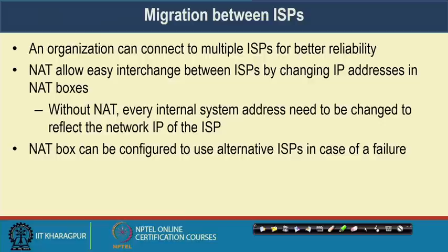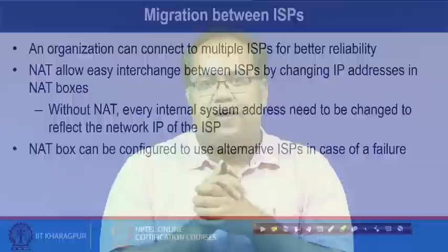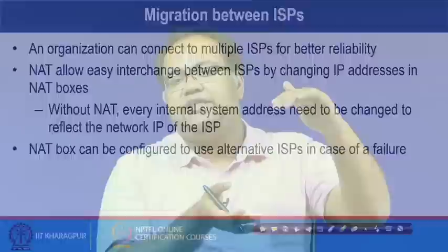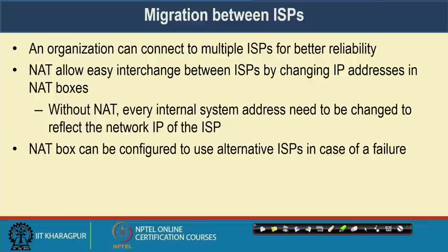NAT has multiple interesting use cases apart from supporting more users with a limited public IP. One interesting case is when you want to migrate between different ISPs. An organization can connect to multiple ISPs for better reliability — for example, IIT Kharagpur network is connected to R-Net as well as NKN network; we call this a multi-home network. NAT allows easy interchange between ISPs by changing the IP address in the NAT boxes. Whenever you change the ISP, your public IP address pool changes, but you do not need to reconfigure the IP addresses of all internal machines inside IIT Kharagpur.